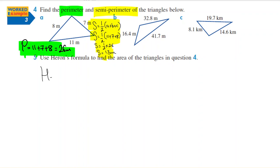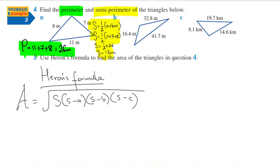So Heron's formula is: area equals—I'll write it underneath actually—A equals square root of s times s minus a times s minus b times s minus c. Now you don't need to memorize this formula. You're going to be provided all of the formulas that you need in the exam.